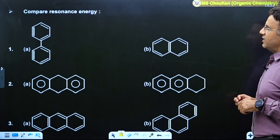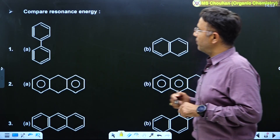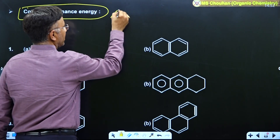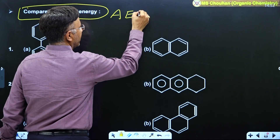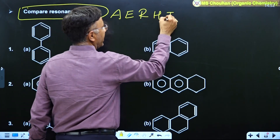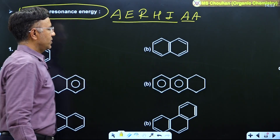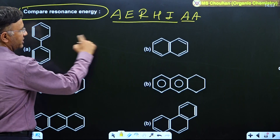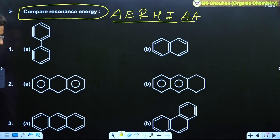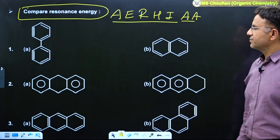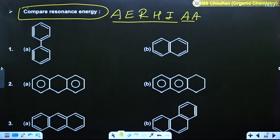Now let's try some examples comparing resonance energy. The approach to follow is: Aromatic, Equivalent RS, Resonance, Hyperconjugation, Inductive, and Anti-aromatic. You have to compare which molecule has more resonance energy in the given pairs. Pause the video, try your answer, then I will explain.